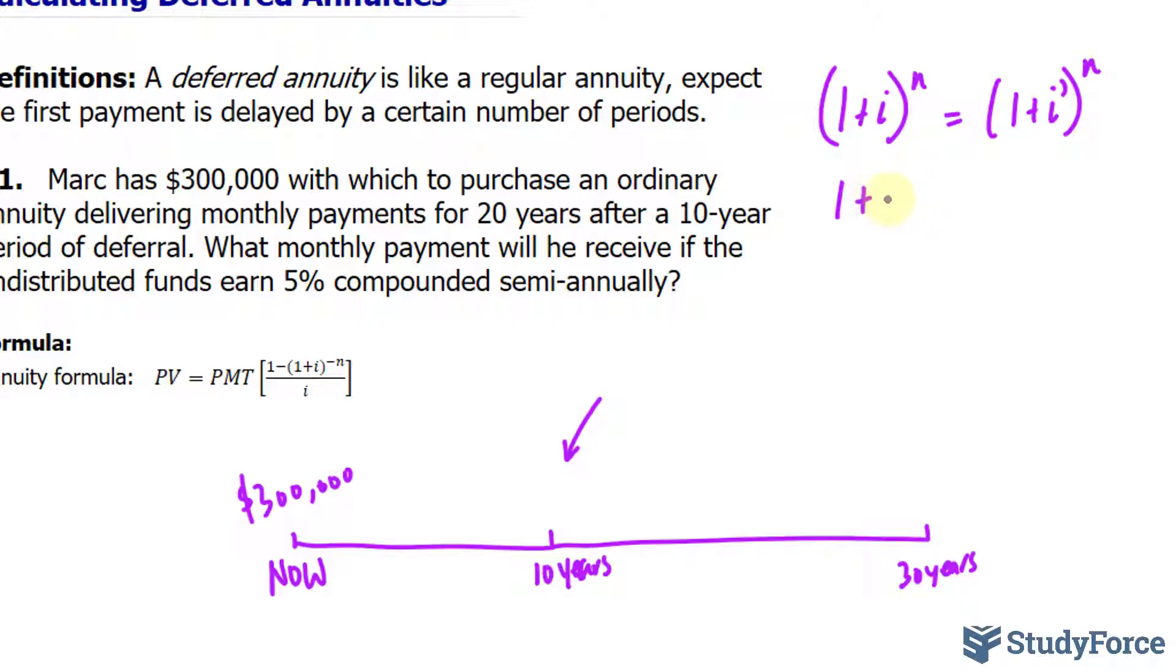I'll write down 1 plus 0.05 divided by 2, because it's semi-annually raised to the power of 2. And what we're looking for is the interest that is monthly. So, 1 plus i prime, that's what we're looking for, over 12 raised to the power of 12.